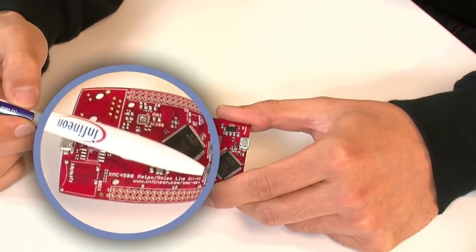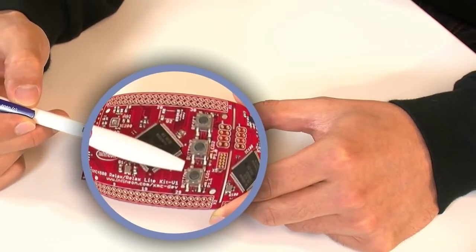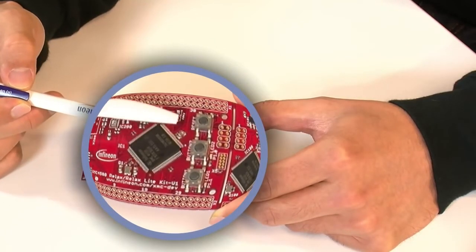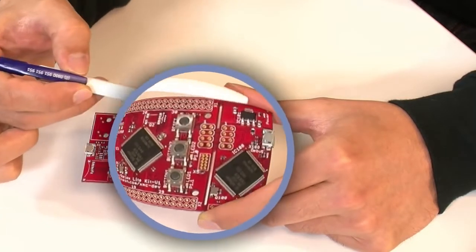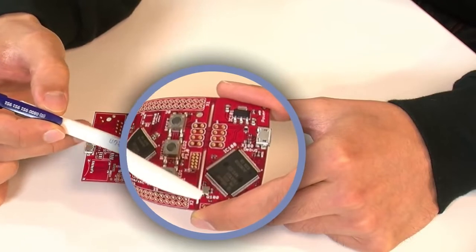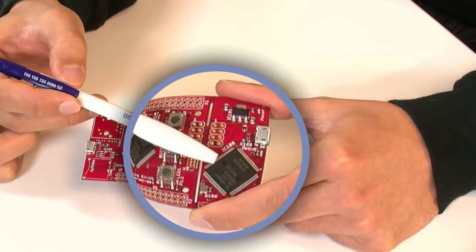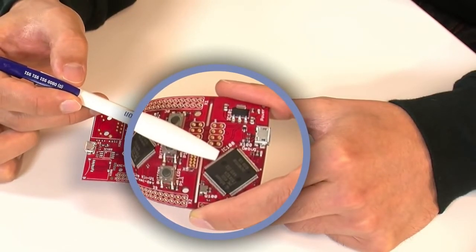Two user LEDs and two user buttons, one reset and a detachable debugger part with the debug IC also implemented on the XMC 4500.